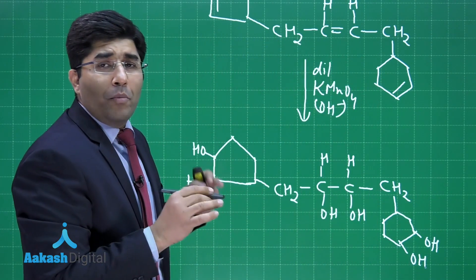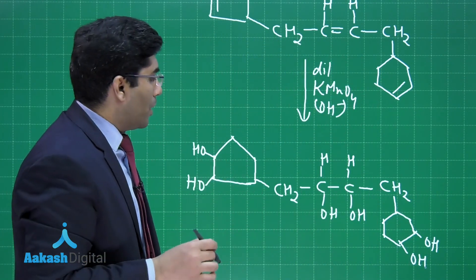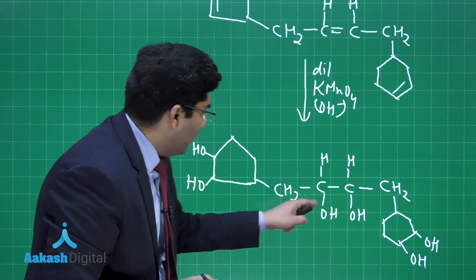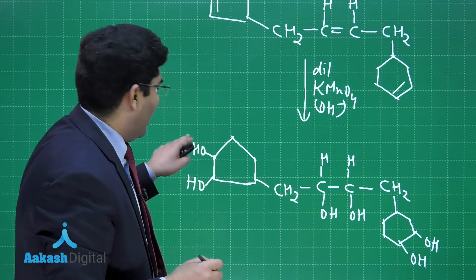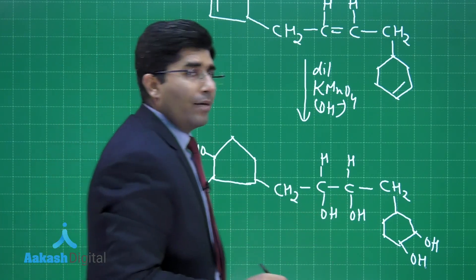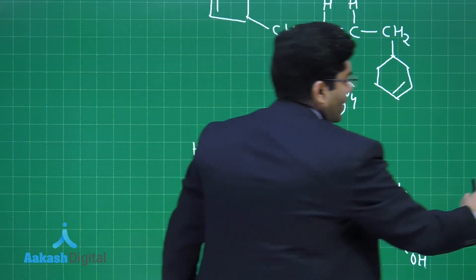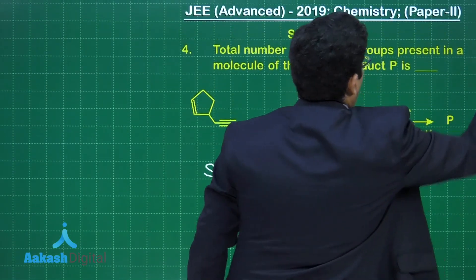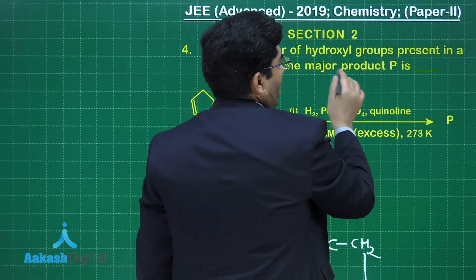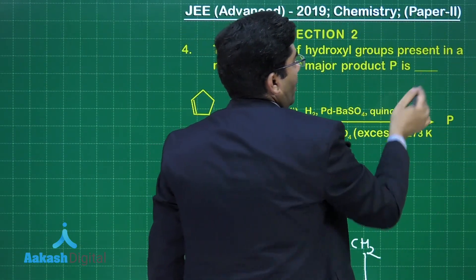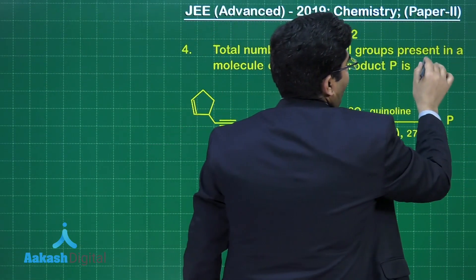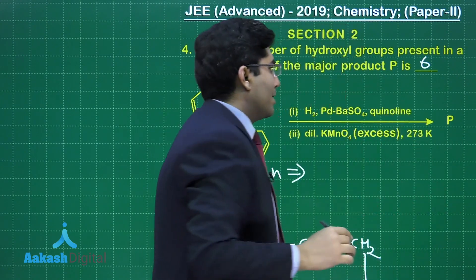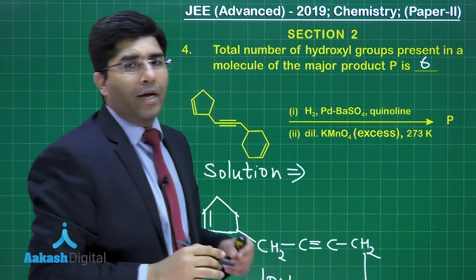He is asking in the question how many hydroxyl groups are present. So 1, 2, 3, 4, 5, and 6 hydroxyl groups are present in this product. In product P, 6 is the correct answer.